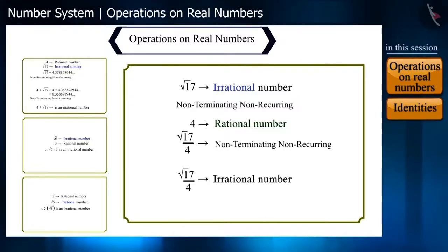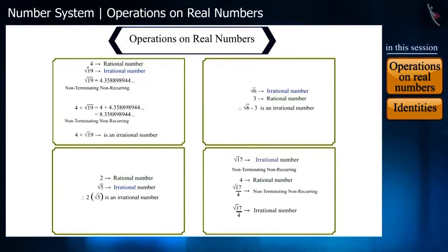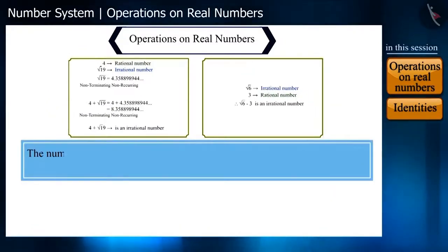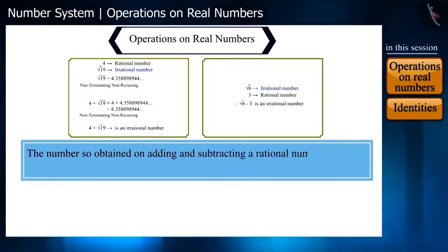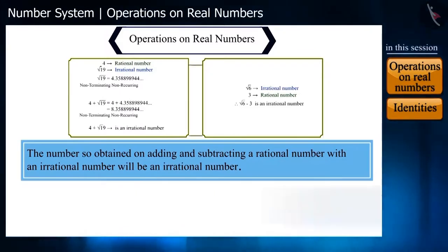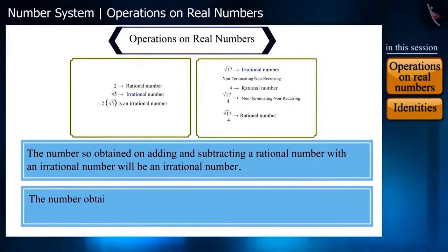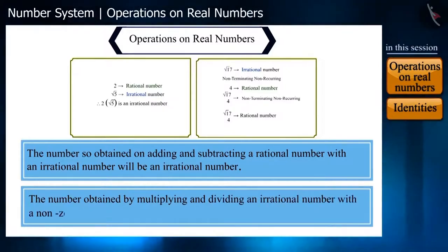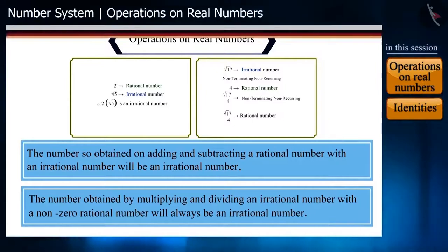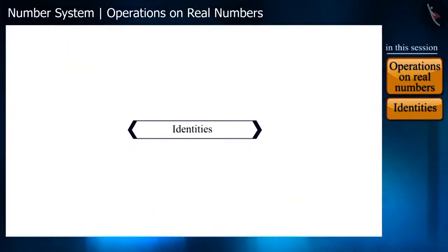From all these examples, we can conclude that adding or subtracting a rational number with an irrational number gives an irrational number. Similarly, multiplying or dividing an irrational number with a non-zero rational number also gives an irrational number.